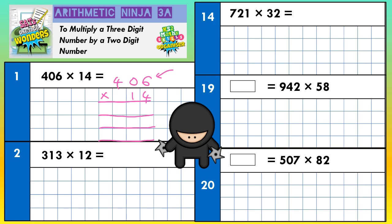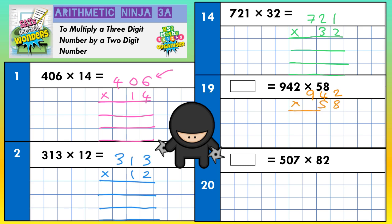I'm going to set the second one out in exactly the same way: 313 times by 12, with three spaces for working out. Then 721 times by 32, with three extra lines for working out. On number 19, we're going to have 942 times by 58 — three lines for working out. And on the final one, 507 times by 82, same again, three lines for working out.